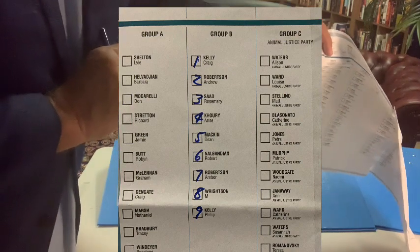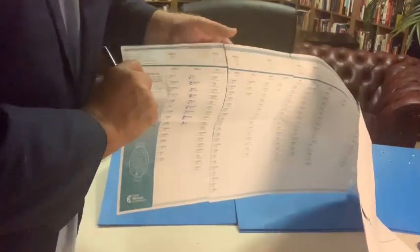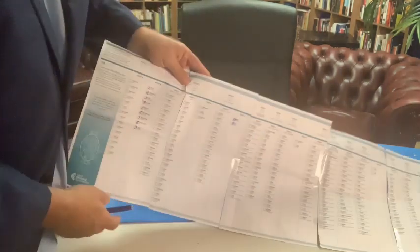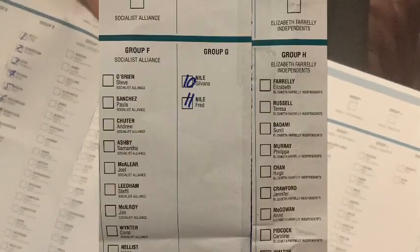But you need to vote actually more than that — remember, 15 numbers below the line. What our preference recommends is that for your numbers 10 and 11, you vote here for Group G, which is for Fred Nile's team — Fred and his wife Sylvana. So they would be 10 and 11.